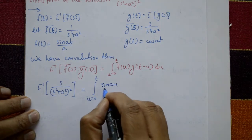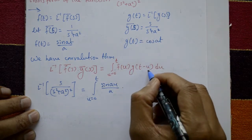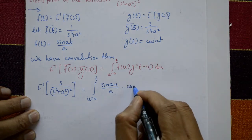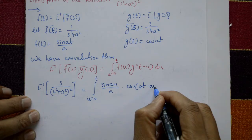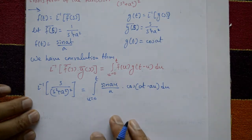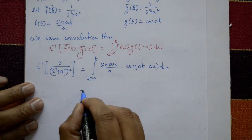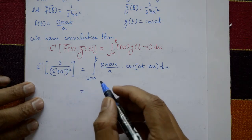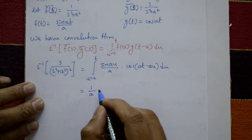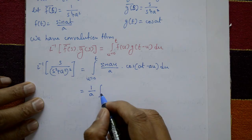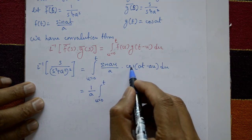This is the convolution of f(t) and g(t). Here g(t−u) becomes cos(a(t−u)) = cos(at − au). So the integral becomes (1/a) times the integral from u=0 to t of sin(au)·cos(at−au) with respect to u.